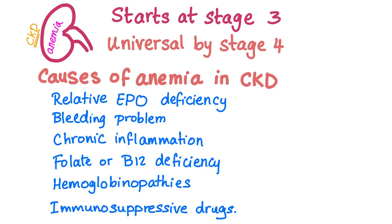Anemia in chronic kidney disease starts at stage 3 chronic kidney disease and is almost universal by stage 4. The stages depend on GFR. I've discussed them in a separate video called the 5 stages of chronic kidney disease based on GFR — I will link it in the description.